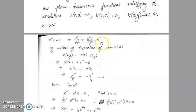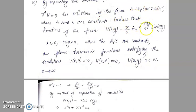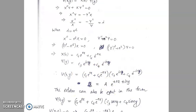By separation of variables, V = X(x)·Y(y). Separating gives X''/X = −Y''/Y = λ. Choosing λ = n², the solutions are X = c₁e^(nx) + c₂e^(−nx) and Y = c₃e^(iny) + c₄e^(−iny). In every product the form is e^(±nx)·e^(±iny), which is the required form of solution A·e^(±nx ± iny).